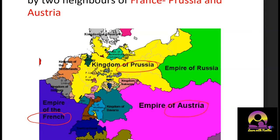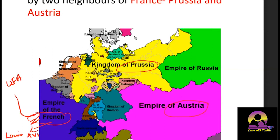Austria and Prussia were keenly observing what was happening in France because they too were absolute monarchies. Anything happening in a nearby country would obviously affect them. France was seen as importing ideas from the American Revolution — American revolution happened about 10-12 years before the French Revolution. These neighbors became scared, thinking that revolutionary ideas would spread across Europe.